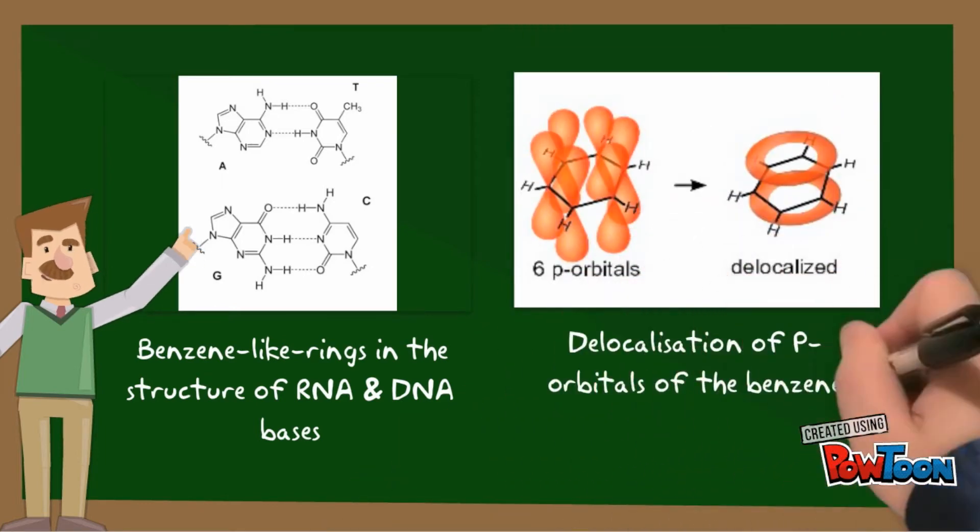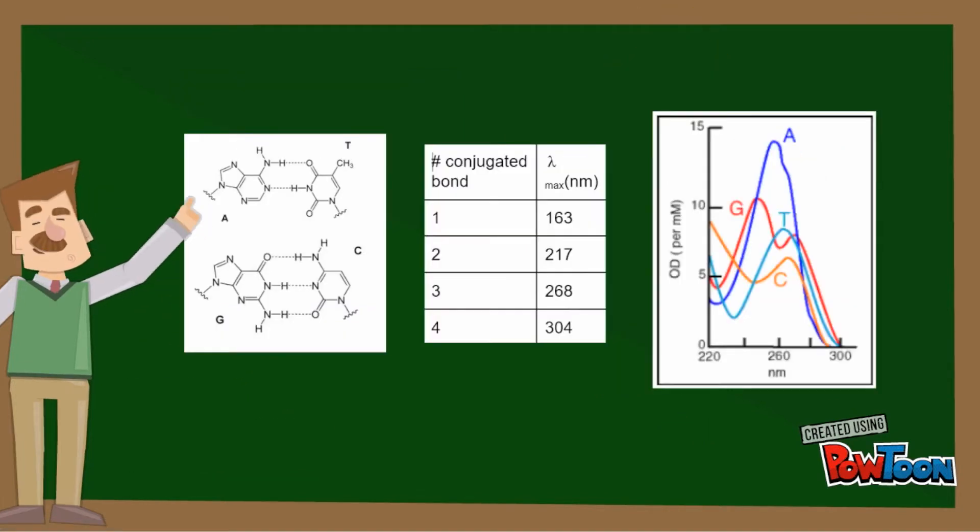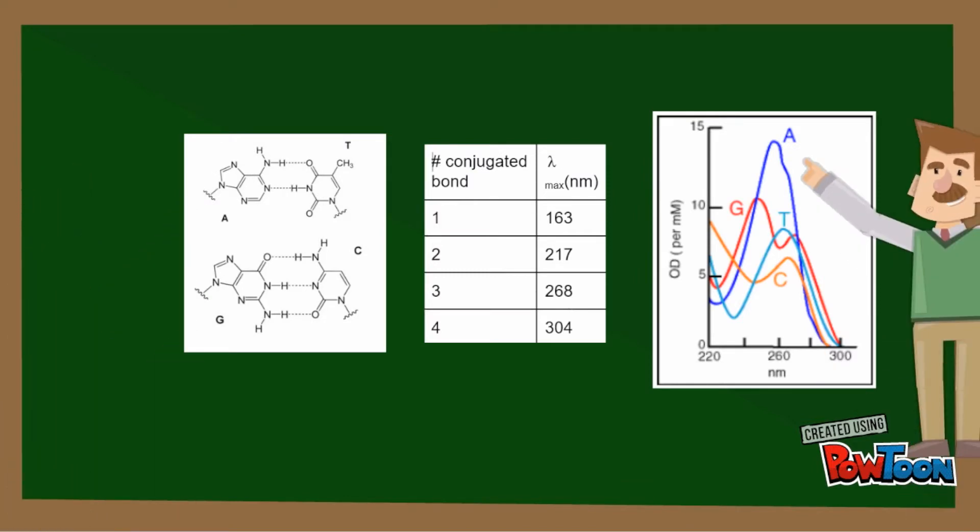In this hexagonal structure, all of the p orbitals overlap, allowing for delocalisation of the electrons and thus the ability of the ring to absorb in the UV spectrum. As can be seen with the bases, the higher the number of conjugated double bonds, the higher the absorption wavelength.